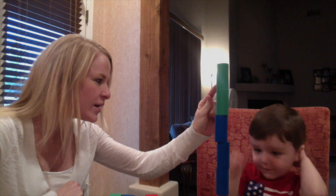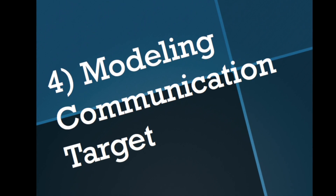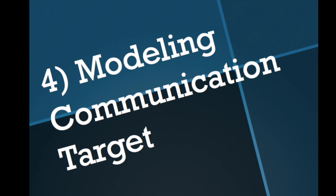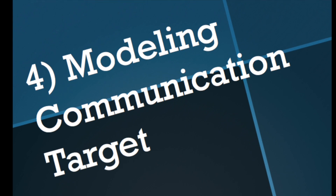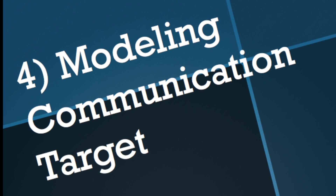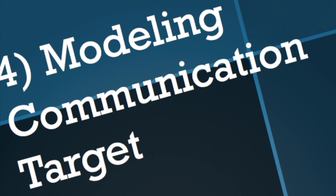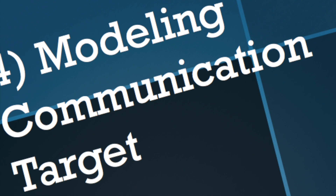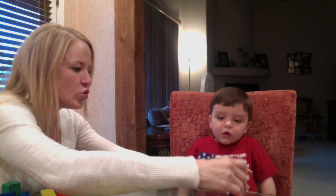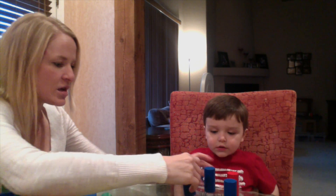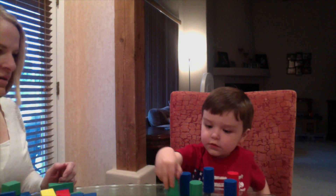The fourth tool is modeling communication targets. We do this by using language that teaches — this is known as target talk — and you do it by expanding your child's utterances. The goal is to increase the rate at which the child communicates, as well as to increase the diversity and independence of communication, because this means their spontaneous communication increases and their dependence decreases. We model this language because children learn language through modeling.